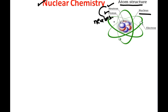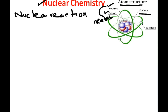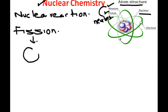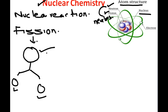We study about the reactions taking place inside the nucleus — these are called nuclear reactions. One popular reaction is the nuclear fission reaction. In nuclear fission, we have a bigger nucleus that is split or broken down into smaller nuclei. So when a big nucleus breaks down into two smaller nuclei, that is called nuclear fission.